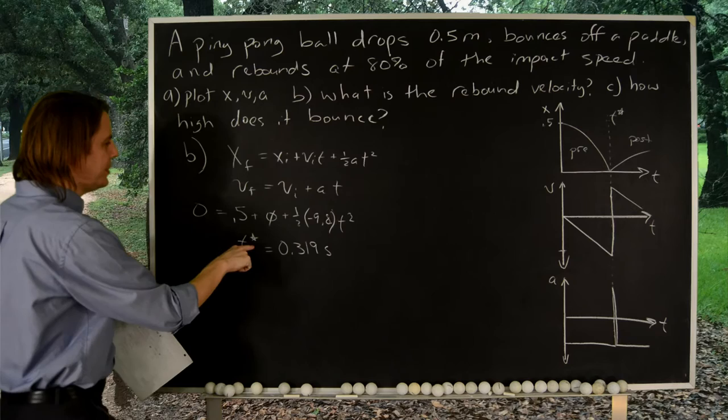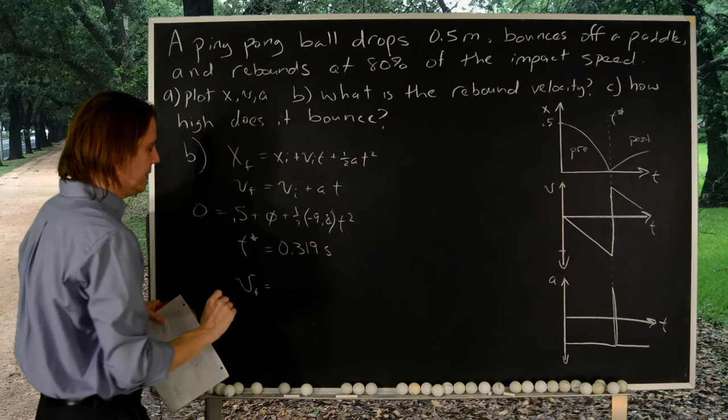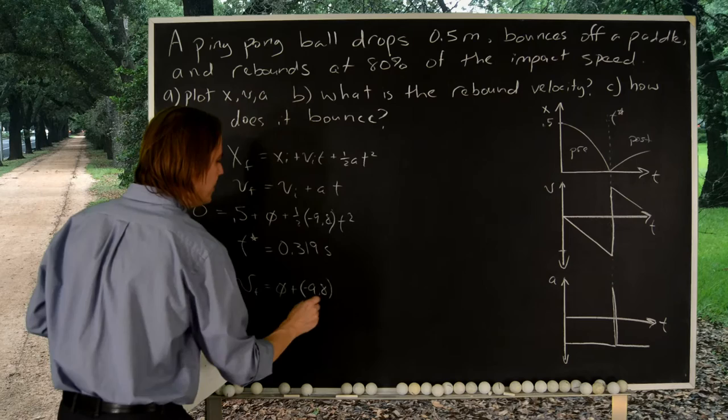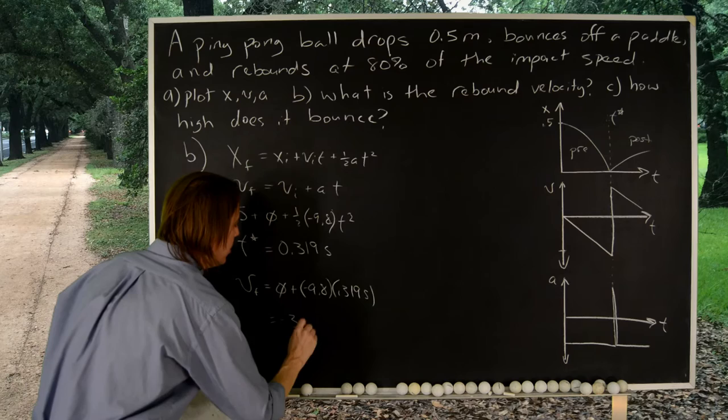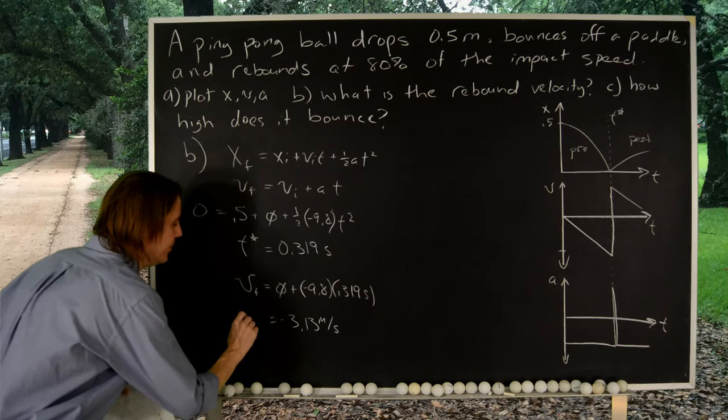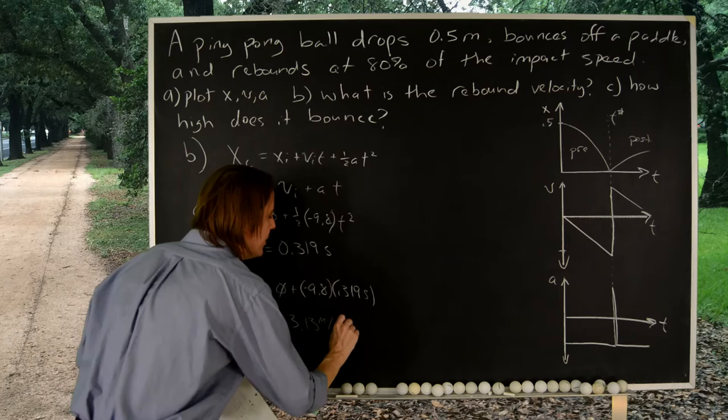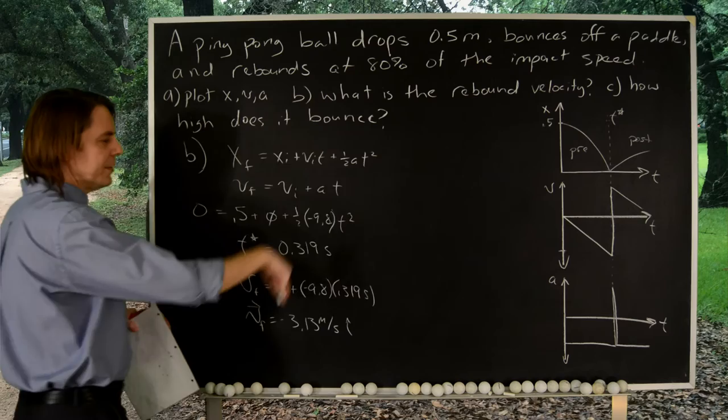Alright. So then we take that t star and we put it in here. And we get that v final is v initial which is 0, plus acceleration which is negative 9.8 times 0.319 seconds. Like that. And we get the number comes out to be negative 3.13 meters per second. And then you look where we asked for the velocity. Yes. So we better make it a vector. V final vector hat, negative 3.13 and I'll just say i hat, to make it for the x-axis unit vector. So negative of course, it's going down.